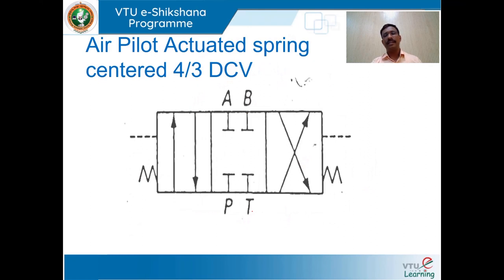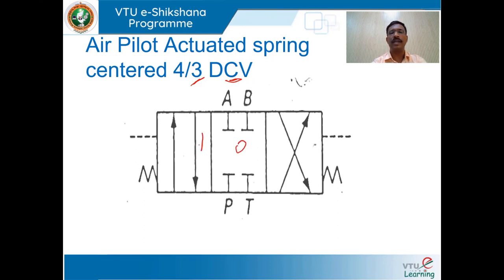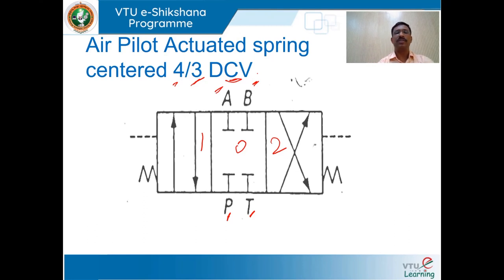We shall draw a symbol for air pilot actuated spring-centered four-way three-position DCVs. Three position means three squares — positions zero, one, two — with four initial connections. P is connected to the pump line, T to the tank line, and A and B to the cylinder. Air pilot actuated is shown by a closed hollow arrow on either side; spring-centered means springs are provided on either side of the spool.